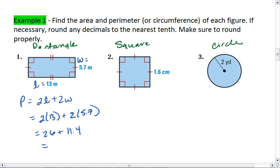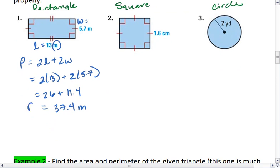26 plus 11.4 is 37.4, and do not forget your units, meters. That's perimeter.